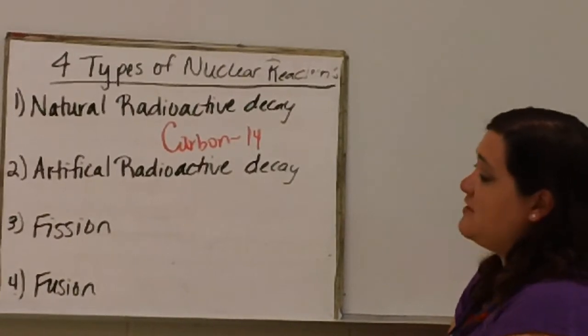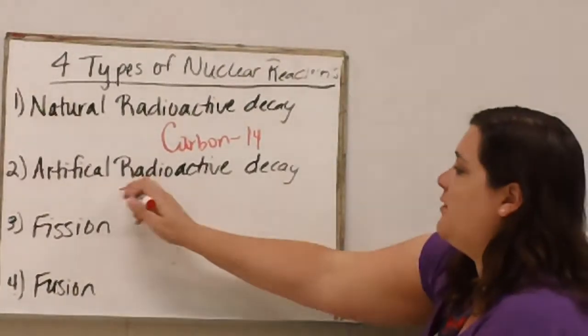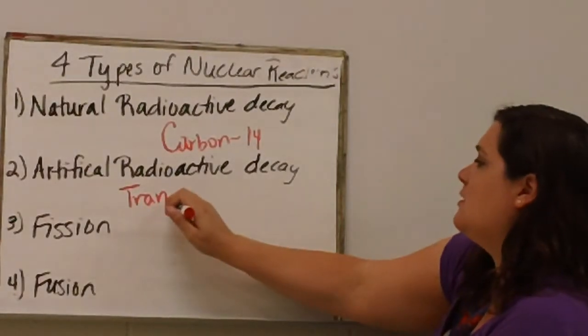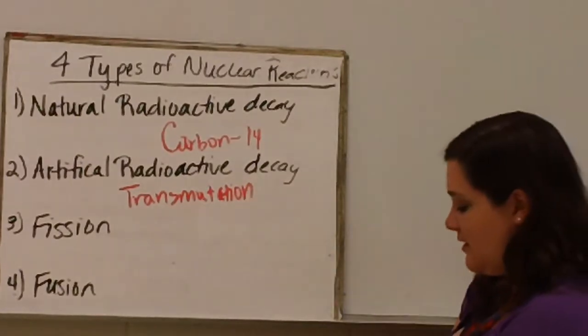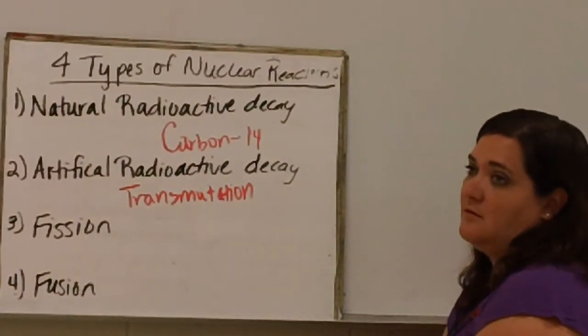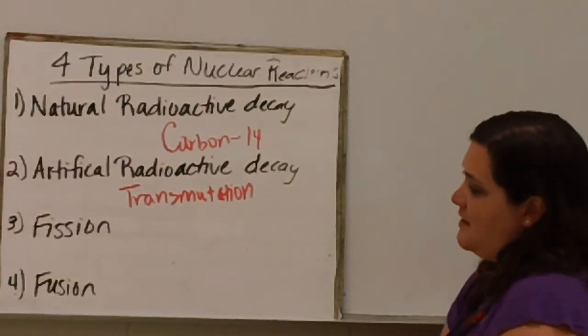Artificial radioactive decay is the idea, like we were just talking about, of transmutation. Where we increase the mass to make an atom unstable, so that it will decay.